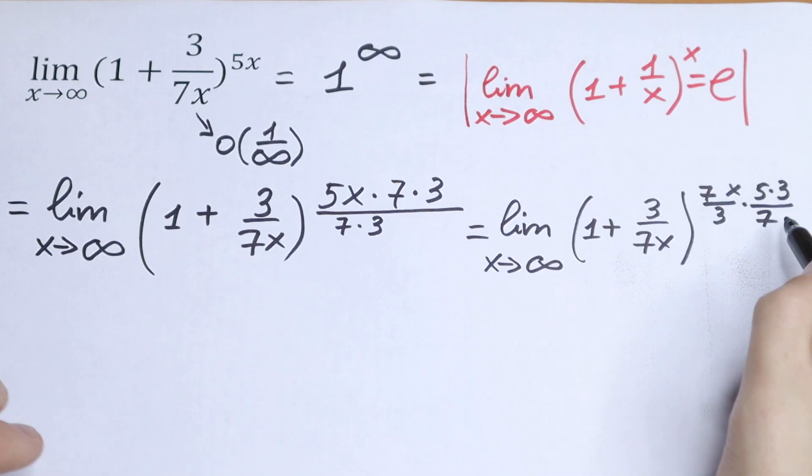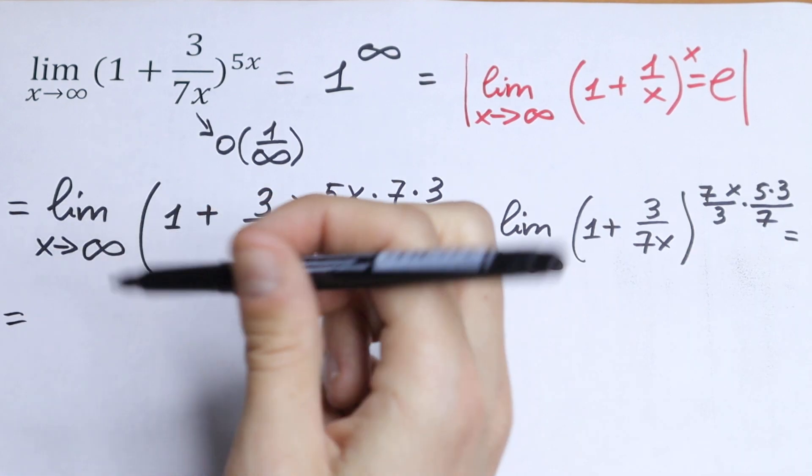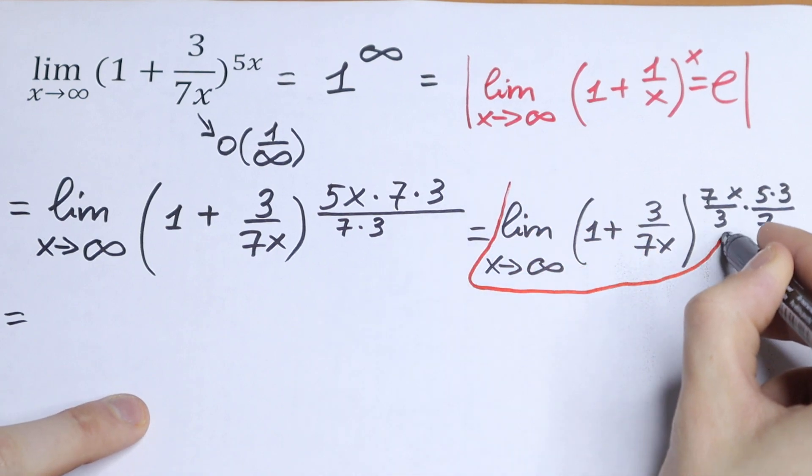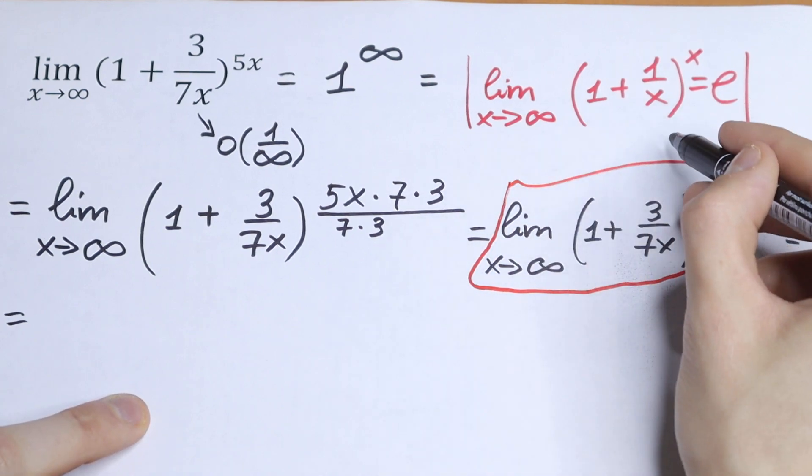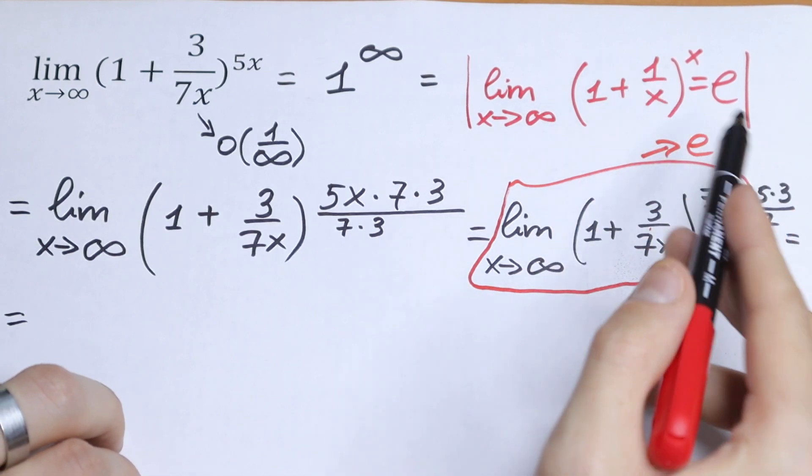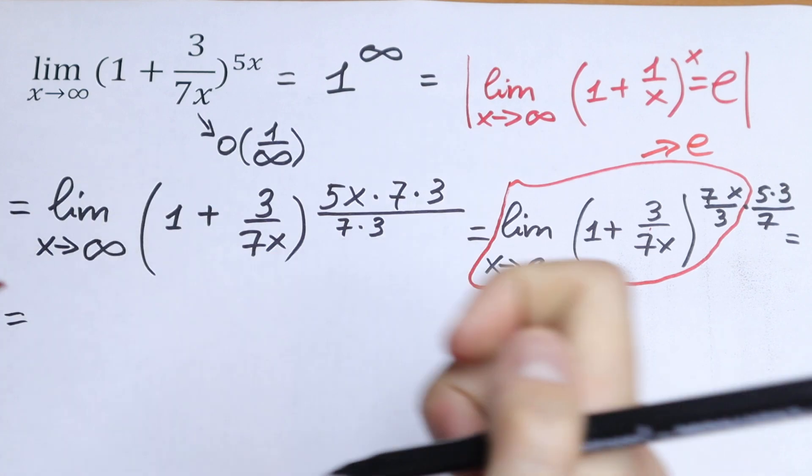What will we have? This will be our limit that we know. This approaches to e. This is the same limit as right here. So as a result, this will be equal to e.